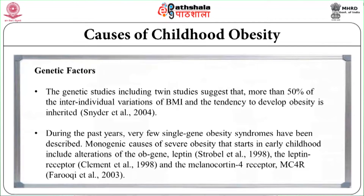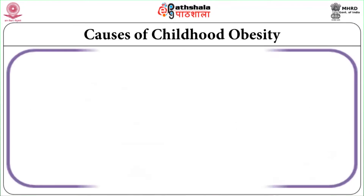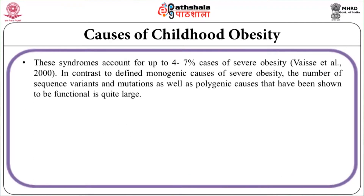Monogenic causes of severe obesity that start in early childhood include alteration of the OB gene — Leptin (Storbell et al., 1998), the Leptin receptor (Clement et al., 1998), and the Melanocortin-4 receptor (MC4R) (Faruqi et al., 2003). This syndrome accounts for up to 4 to 7% of cases of severe obesity (Westy et al., 2000).